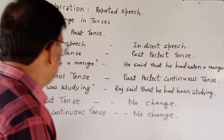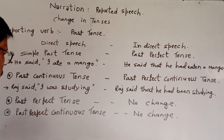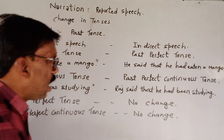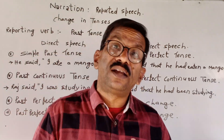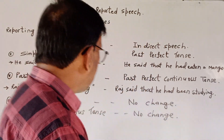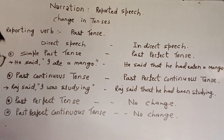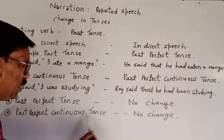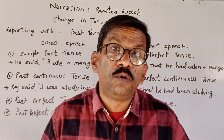Now, if in direct speech there is a past perfect tense, then in indirect speech there will be no change. Similarly, if in direct speech there is a past perfect continuous tense, then there will be no change — we don't have to make any change.